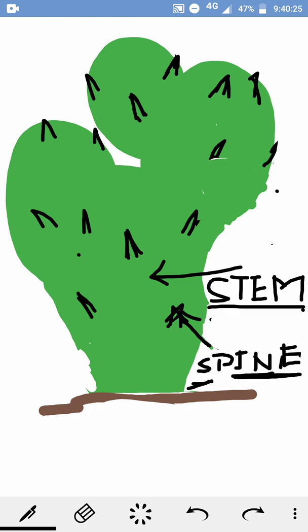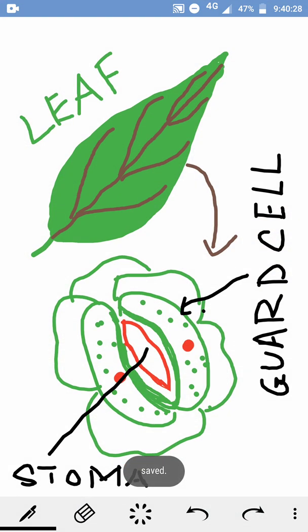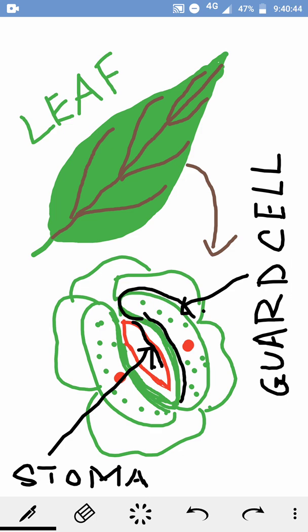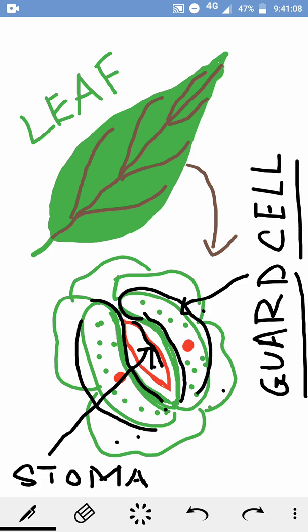So any part of the plant that has the green pigment can make food. Here I have drawn the stomata in more detail. The red colored part drawn here is the stomatal opening, and it is guarded by two bean-shaped structures drawn in green — these are the guard cells. Two guard cells guard the stoma, the stomatal opening, and they control the opening and closing of the stomata.